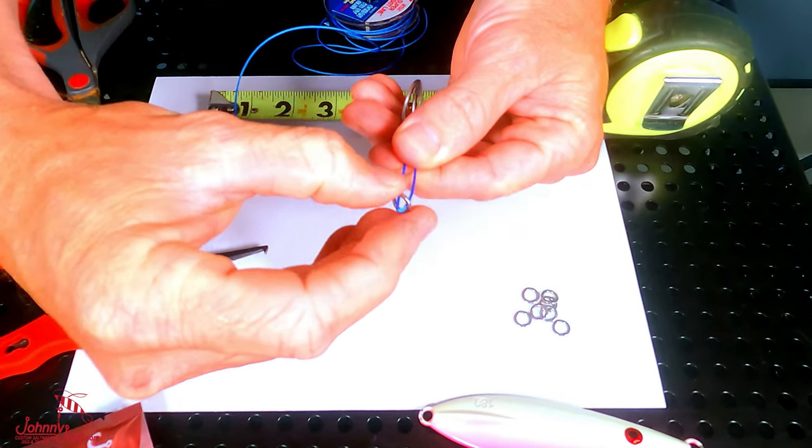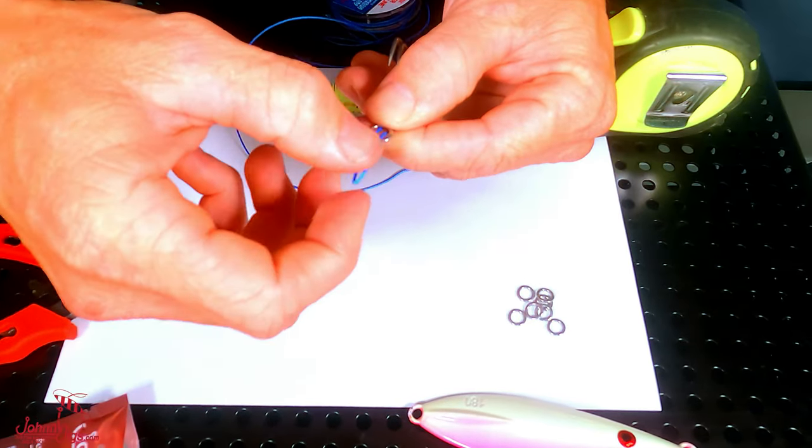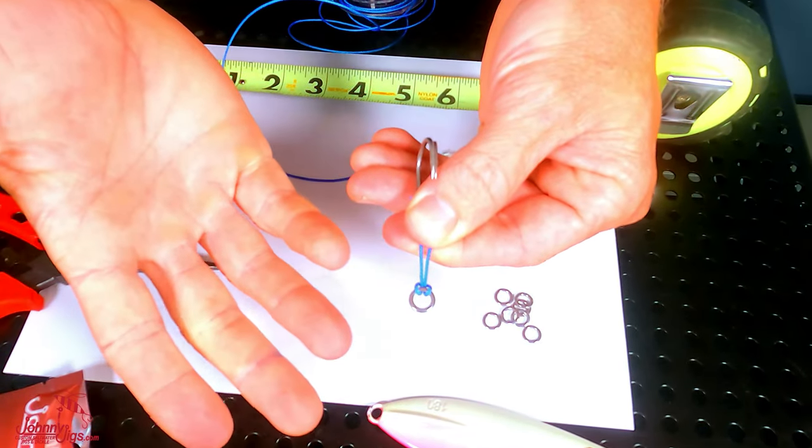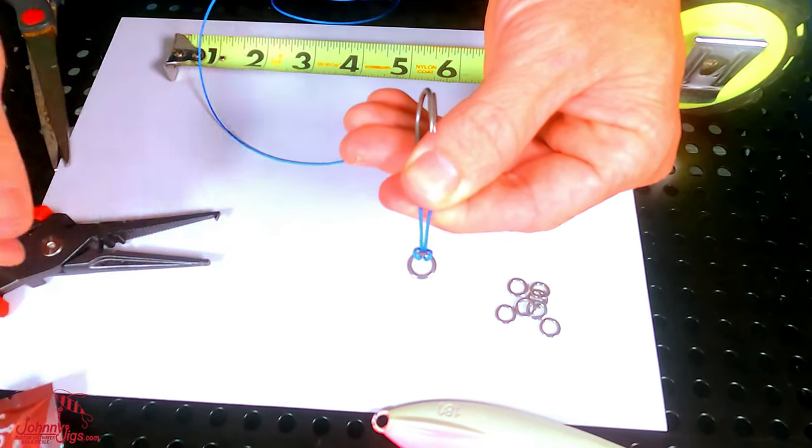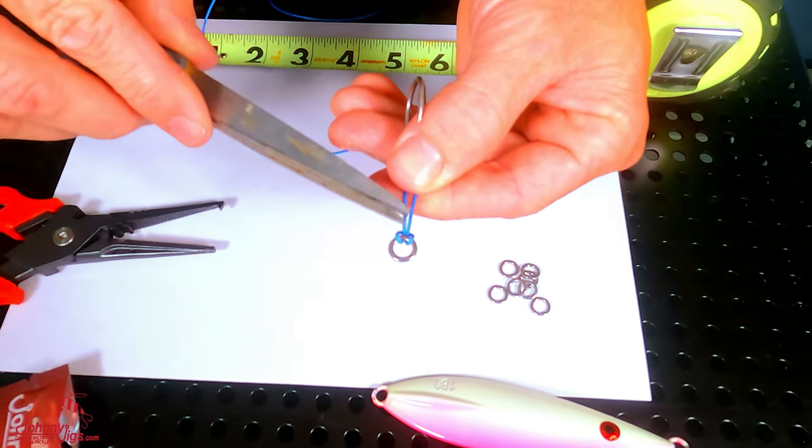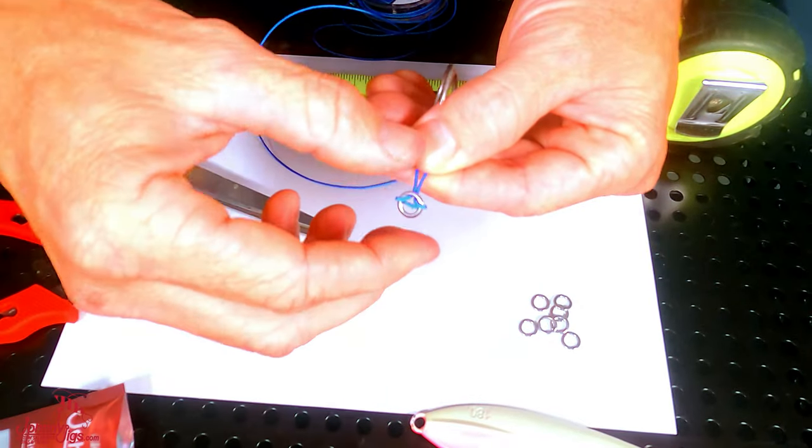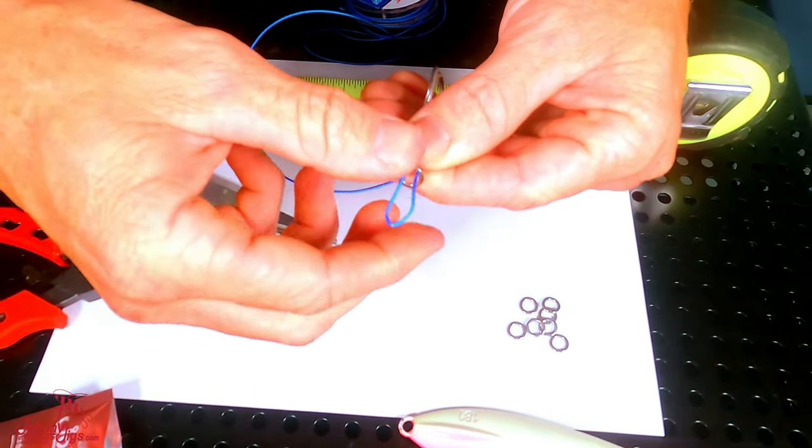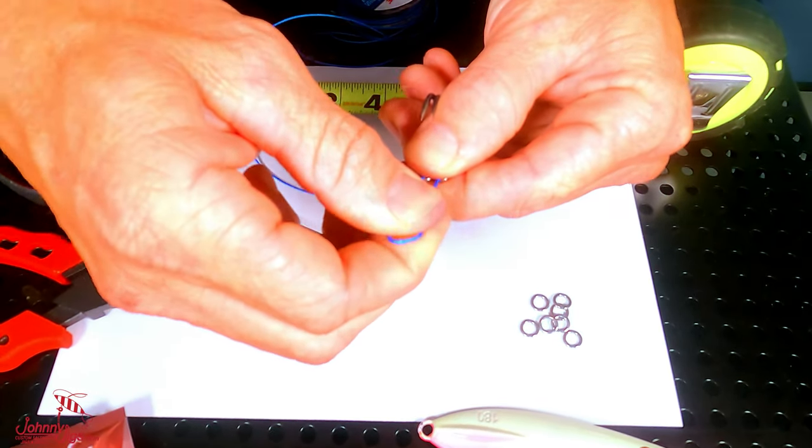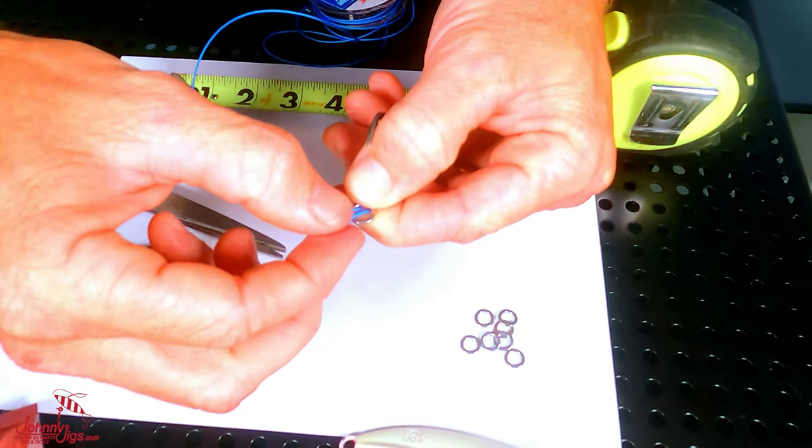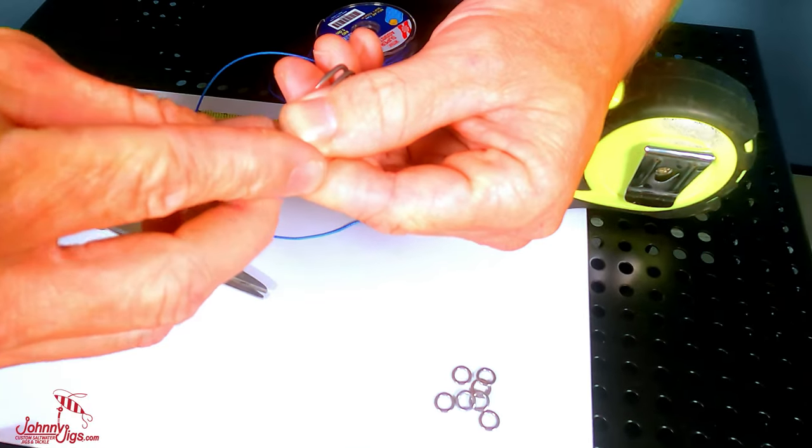Then you lay the solid ring on top. Most people will just go over the top and pull the solid ring right there and then they're done. But what happens is if it gets cut at this point right here, then the solid ring will just pull off and you lose both hooks.